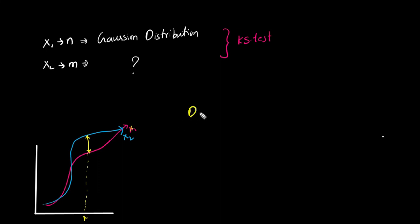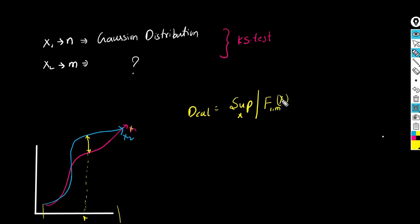The distance we calculate at point x we call the calculated value. D_calculated is equal to the supremum distance at x, where x can be any value between the two ranges but is the same for both x1 and x2. This is given by |F1_m(x) - F1_n(x)|, and this is our calculated value.